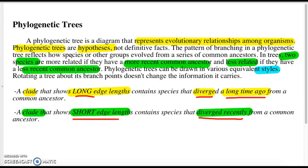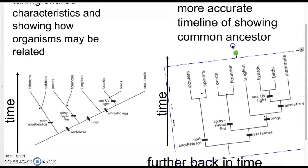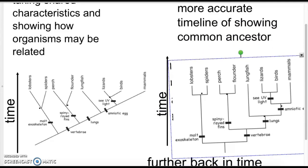The pattern of branching as a phylogenetic tree reflects how species or other organisms evolve from a series of common ancestors. Two species are related if they have more recent common ancestors, and less related if they have a less recent common ancestor. Phylogenetic trees can be drawn in various styles. It could be written like this, and you can also turn it to the side and be written like this. Either way is fine for a phylogenetic tree.